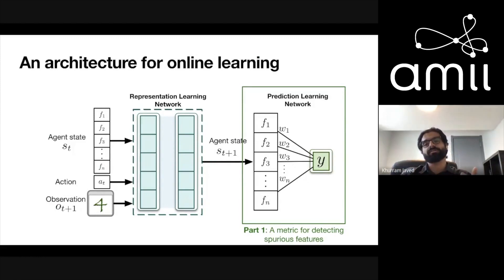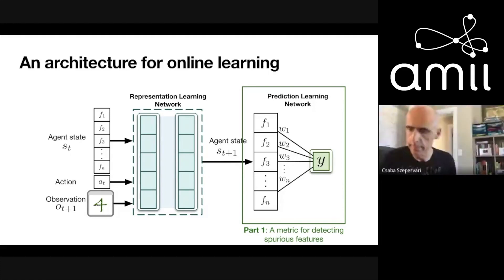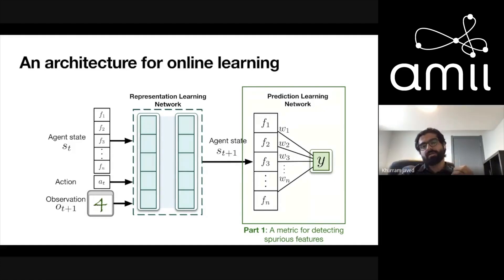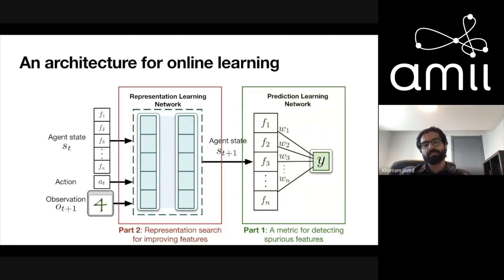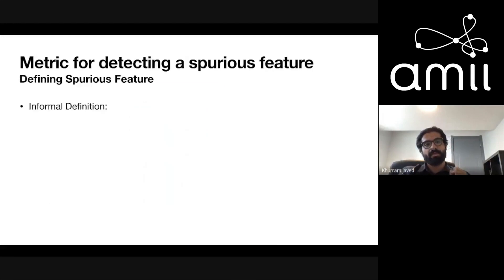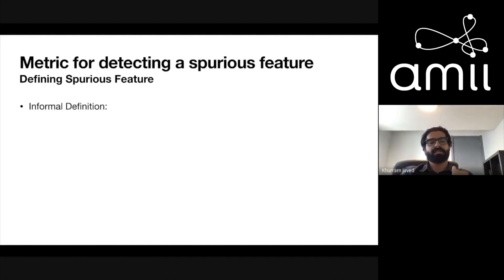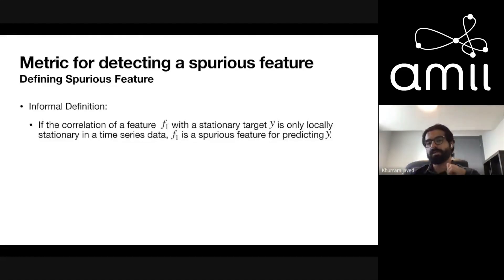Part one of this talk is about a metric for detecting what I call spurious features. In this part I'll assume I have a state. Part two will propose a method for learning representations, so that when you combine both parts you can do it end to end. So let's focus on part one. I have to define what I mean by a spurious feature. The definition is: if the correlation of a feature F1 with respect to a stationary target is only locally stationary, then F1 is a spurious feature.